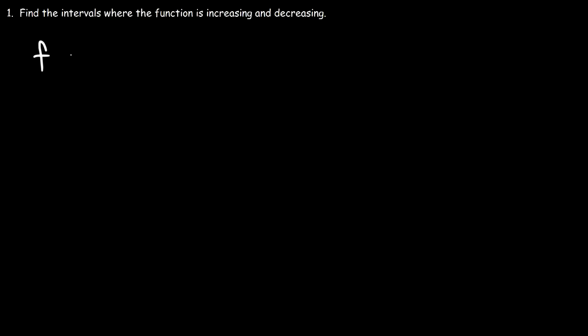Let's say we have this particular function: f(x) = x squared minus 3x plus 1. What we need to do in order to find where the function is increasing and decreasing without graphing it is find the first derivative, set it equal to 0, and make a sign chart. Then we can determine where it's increasing and decreasing.